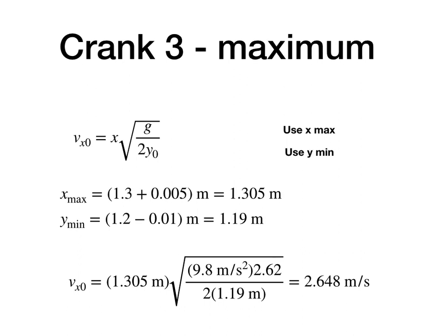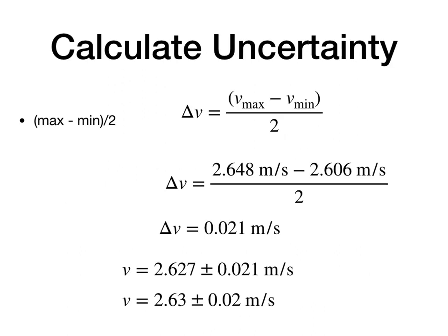Now, for the maximum. Crank three. Now, I'm going to switch those. Now, I'm going to put x max and y min. And I get 2.648 meters per second. And if you need to pause this and look at the numbers, do that. I'm just going fast because I'm getting bored. So, now I can calculate the uncertainty. It's the max velocity minus the minimum velocity divided by 2. So, it's 2.648 minus 2.606 divided by 2. And I get 0.021. So, again, I can drop that 1 one-thousandth of a meters per second. Because I don't really care. So, that's just going to give me a velocity of 2.63 plus or minus 0.02 meters per second.